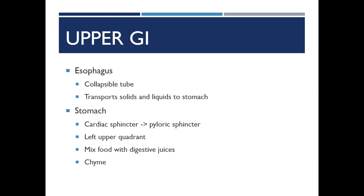Your stomach begins at the cardiac sphincter of the esophagus and extends into the duodenum through the pyloric sphincter. Anatomically, it's located in the left upper quadrant of the abdomen, slightly inferior to the diaphragm. The function of the stomach is to mix food with digestive juices, causing the chemical and mechanical breakdown of food into chyme. The stomach produces and secretes hydrochloric acid, pepsin, intrinsic factor, and mucus.